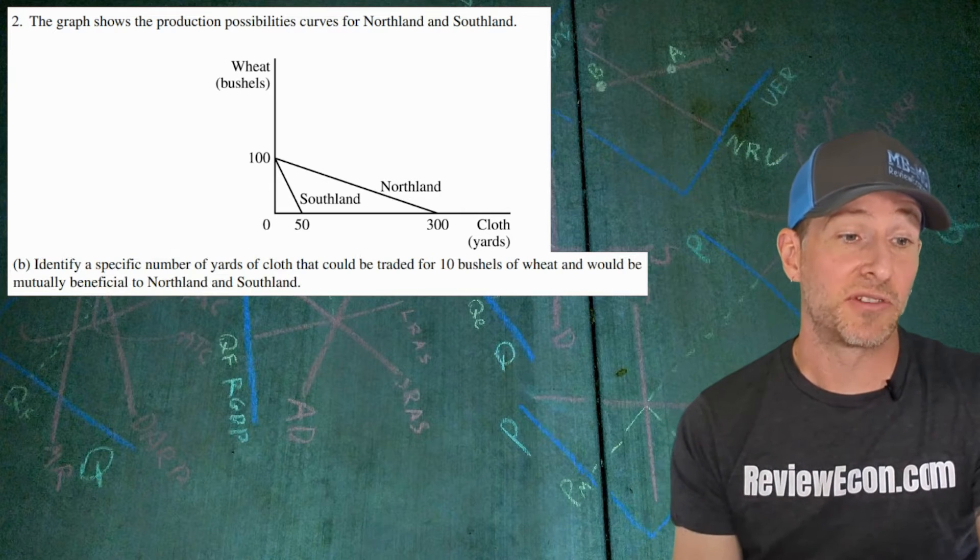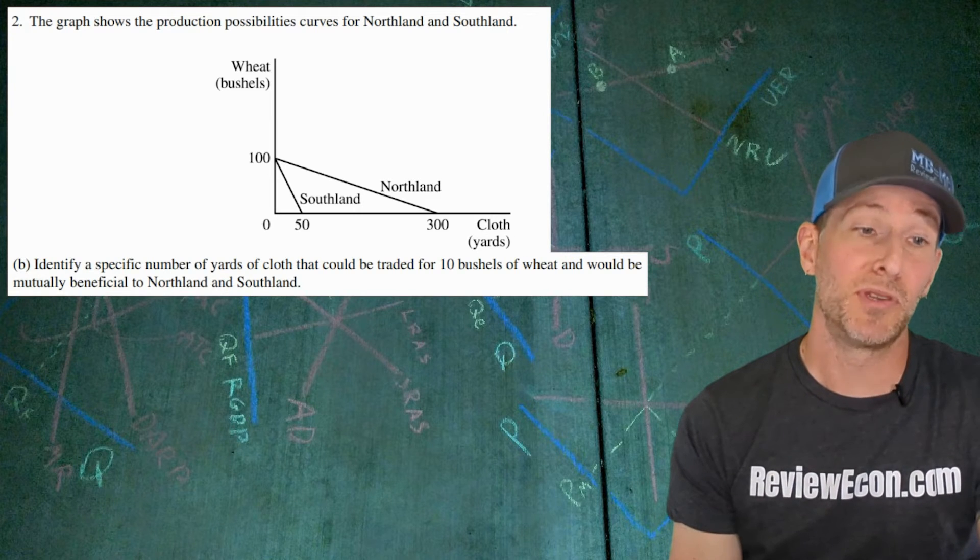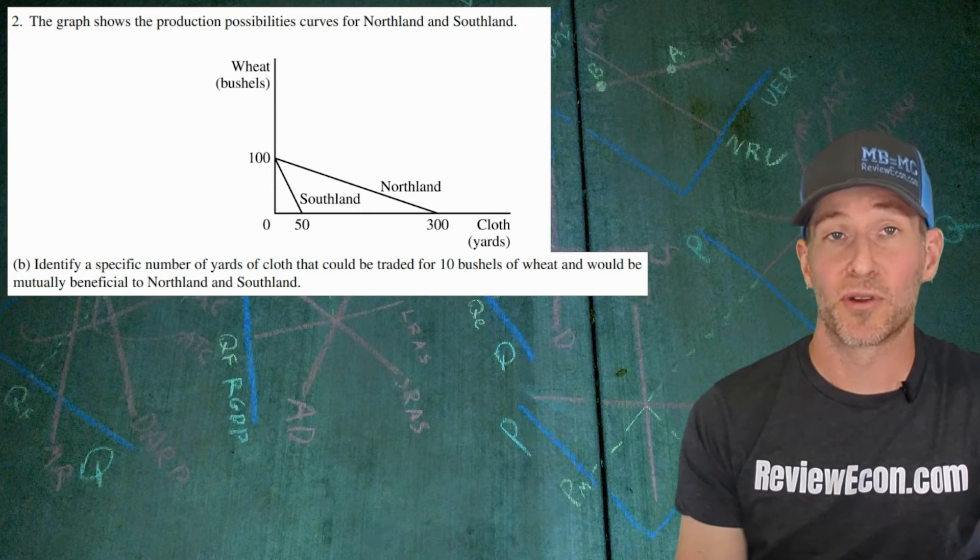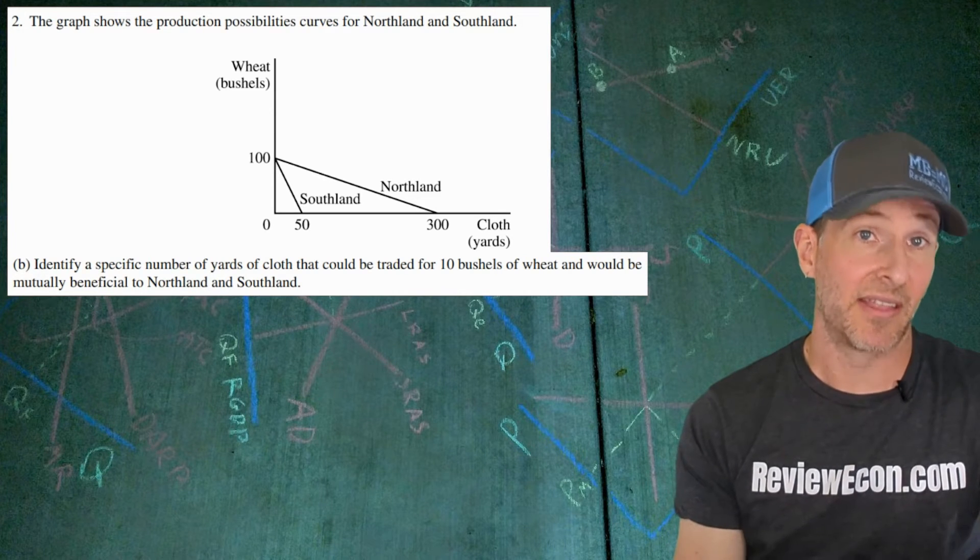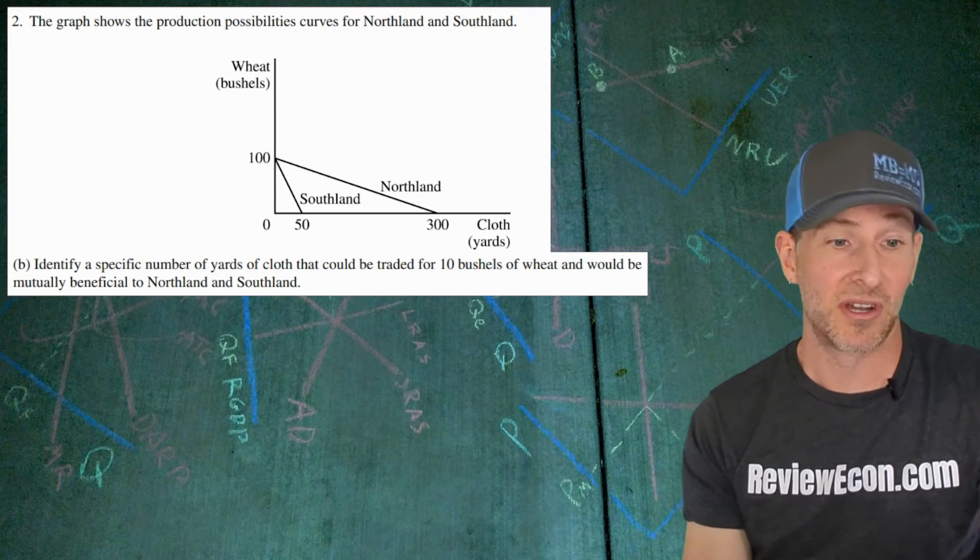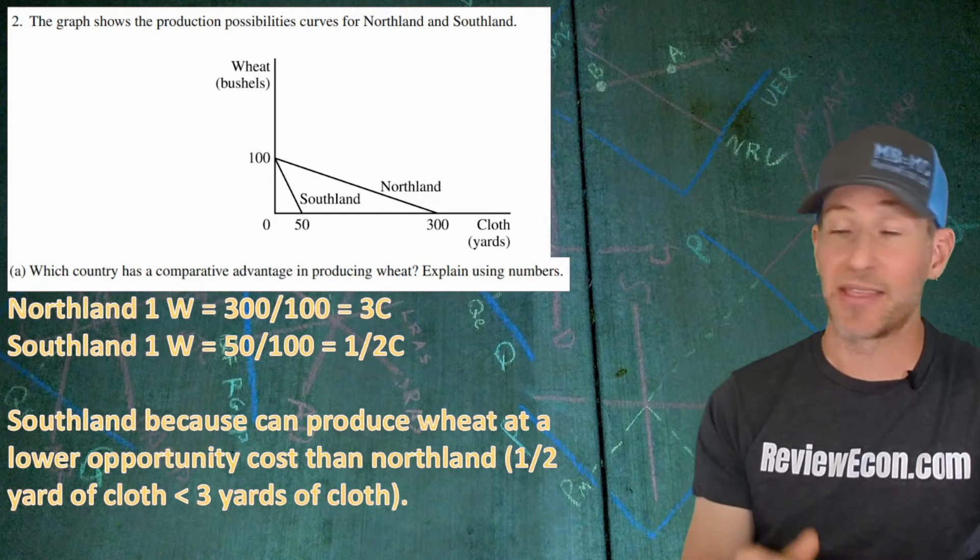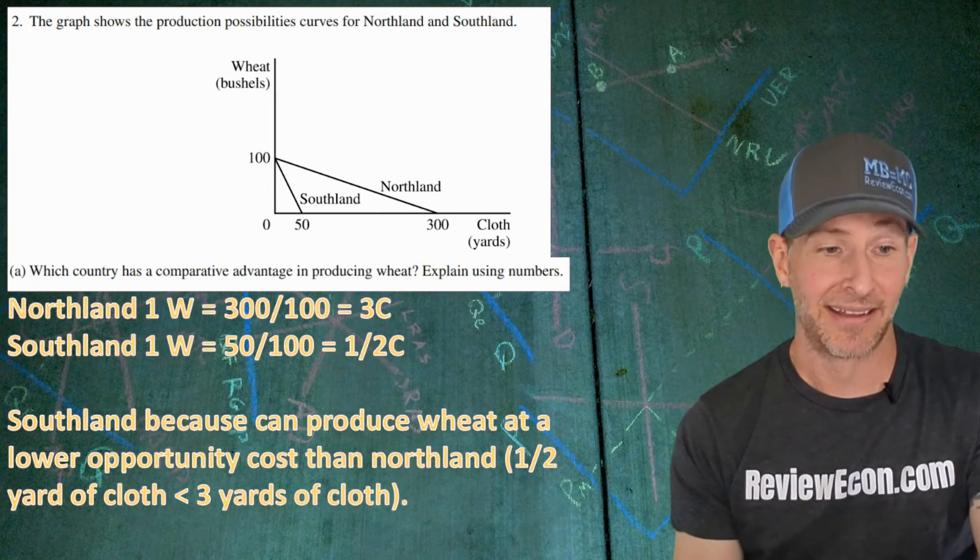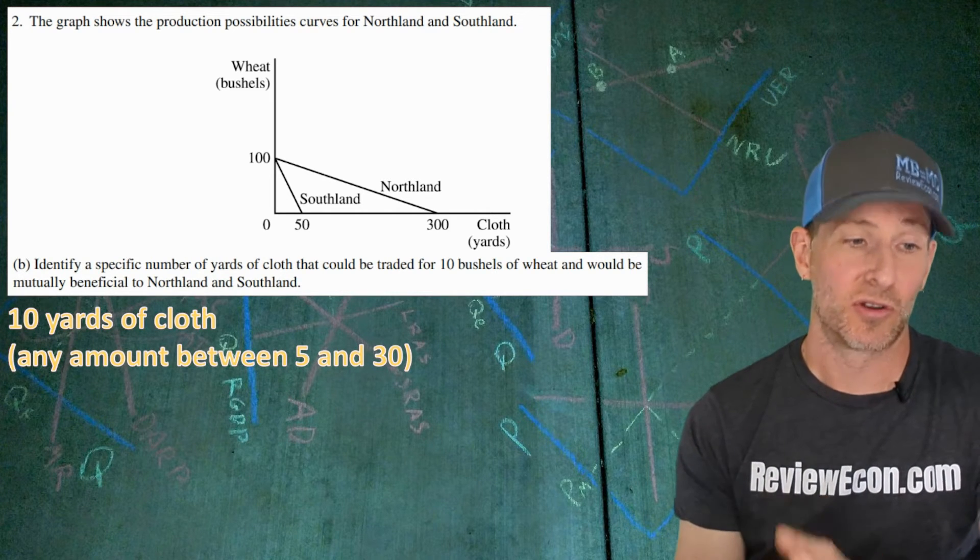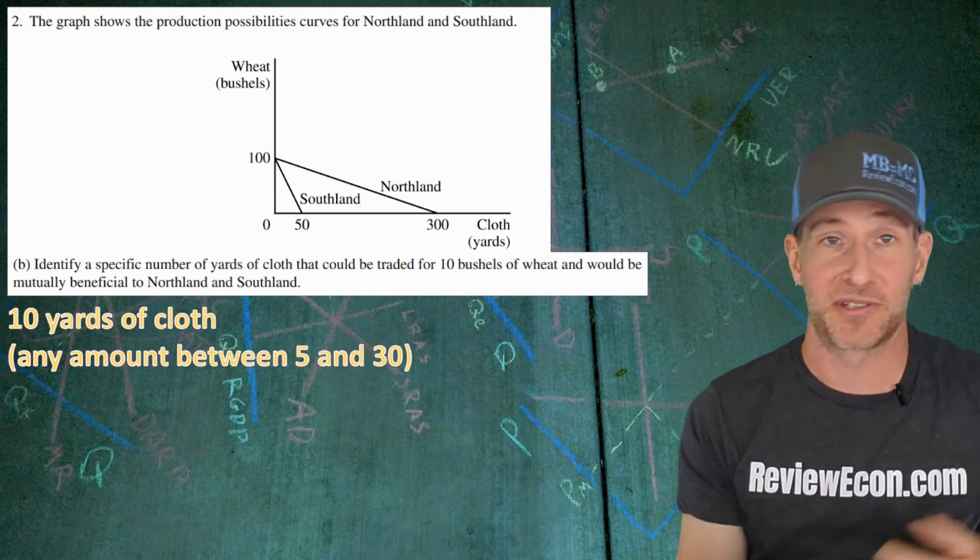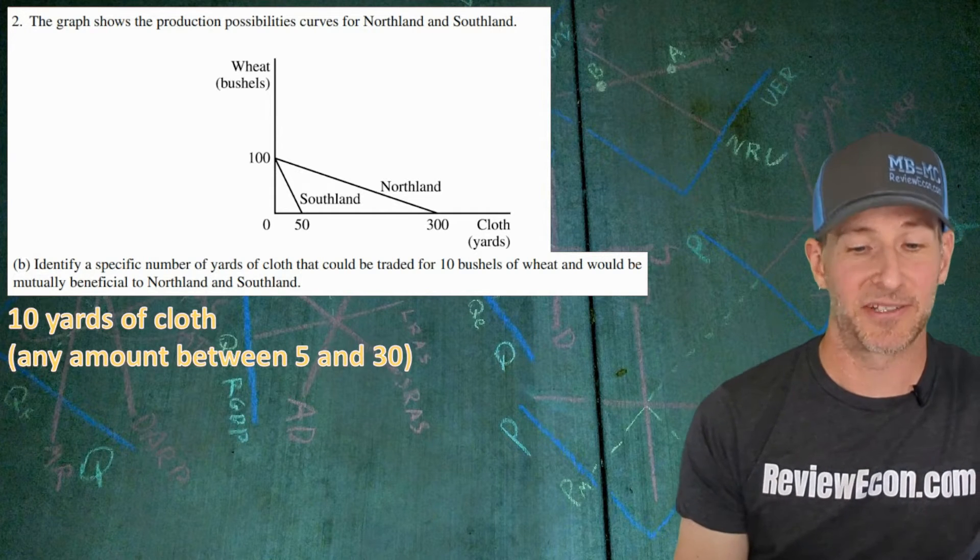On to part B, we're going to identify a specific number of yards of cloth that could be traded for 10 bushels of wheat that would be mutually beneficial for Northland and Southland. So remember, one bushel of wheat should trade between their opportunity costs if it's going to be mutually beneficial. Instead of it being one though, now we have 10. So you're just going to multiply those opportunity costs by 10 to come up with our amount. Any amount between 5 and 30 should work. I put 10 yards of cloth here.